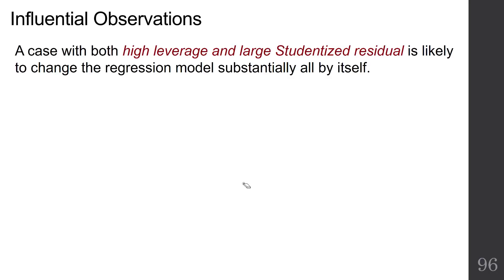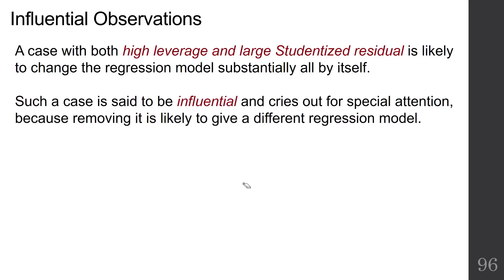Now, a case with both high leverage and a large studentized residual is likely to change the regression model substantially all by itself. And this is the subject of our third topic, influential observations. A case is said to be influential when you have high leverage and large studentized residual and cries out for special attention because removing it is likely to give a different regression model.